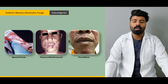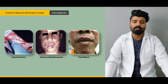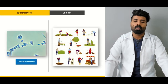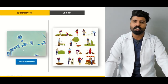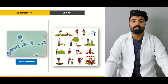Next, we're going to talk about the subcategories: sporotrichosis, paracoccidioidomycosis, and penicillosis. We're going to talk about all of these in detail, starting from sporotrichosis — we're going to talk about the causative organism and the etiological features common between all individuals that get sporotrichosis.